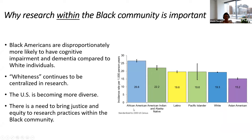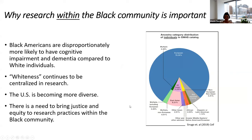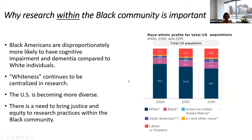Black Americans are disproportionately more likely to have cognitive impairment and dementia compared to white individuals, yet whiteness continues to be centralized in research. About 80% of GWAS data is European while only about 2% is from African ancestry. This is increasingly important as the United States becomes more diverse — for the first time, there's a decline in people who identify as white, while every other marginalized group is increasing, especially within the Latinx and Hispanic population. There's a real need to bring justice and equity to research practices within the Black community.